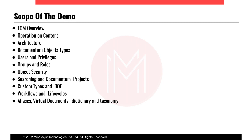Then the custom object type — whenever you are going to create anything new in Documentum, you have to create a custom object type. Based on that, your content will be served in Documentum, and to make the custom object type referable, we have to do the business object framework. Then workflow and lifecycle, which is also an important topic. Then Alias, Virtual Document, Dictionary, and Taxonomy — Dictionary and Taxonomy are mainly used in D2, not in EasyWeb, Taskspace, or Webtop. They make it easier to do development and to make the customer experience easier.